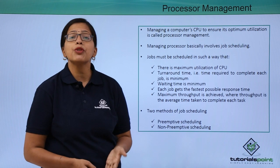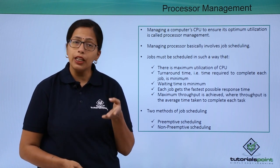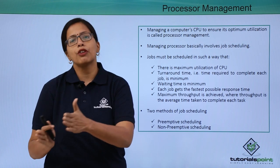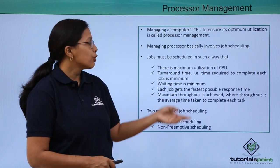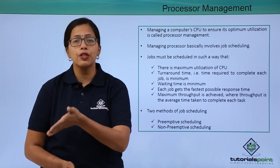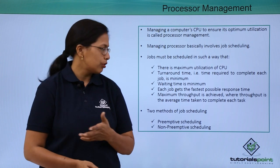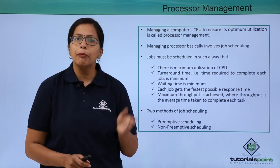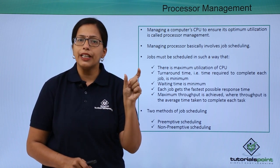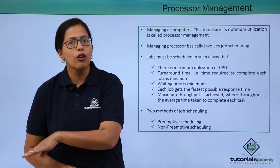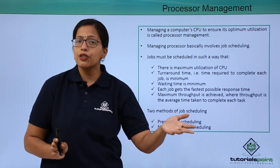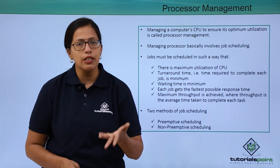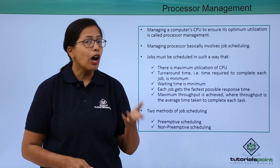The turnaround time — that is, the time required to complete each task — has to be minimum, and the waiting time is also minimum. A task that may not be of the highest priority should not keep waiting for a long period of time. Each job should get the fastest possible response time, and maximum throughput is achieved. Throughput is the average time taken to complete each task. If you complete one task very quickly but relegate another to the corner, the average response time decreases and throughput also decreases. It is the job of the operating system to maintain throughput.